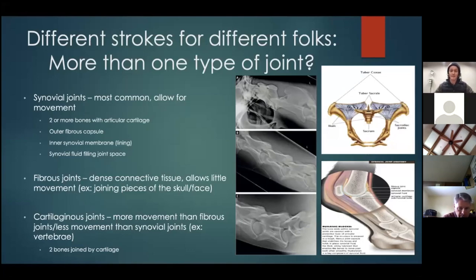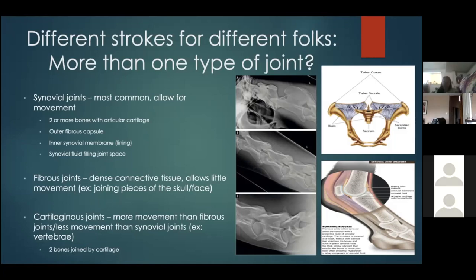Synovial joints have an outer fibrous capsule, and within that is what's called the synovial lining or membrane. Within that space is joint fluid — synovial fluid — that fills the space. There's a normal amount of that; we don't want too much and we don't want too little.